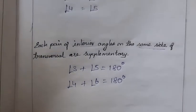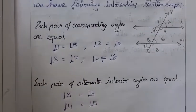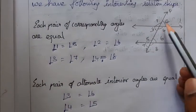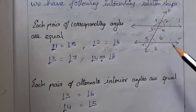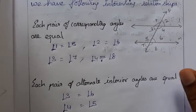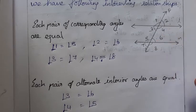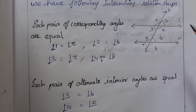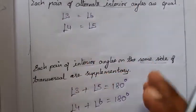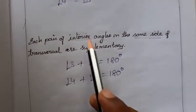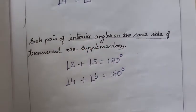While solving problems, be careful — the angles may not always appear in the same order 1, 2, 3, 4, 5, 6. The numbers can be at different positions. Remember the relationships by name: corresponding, alternate interior, interior same side.